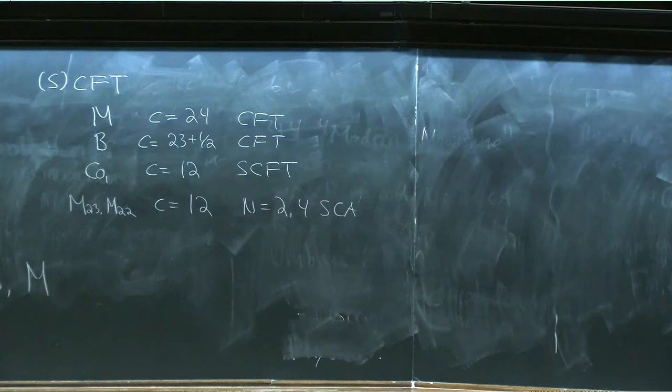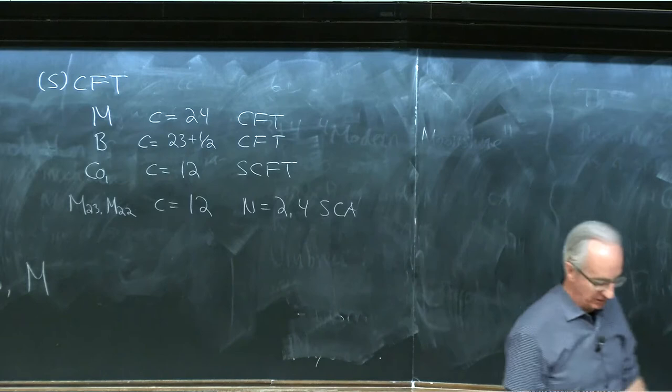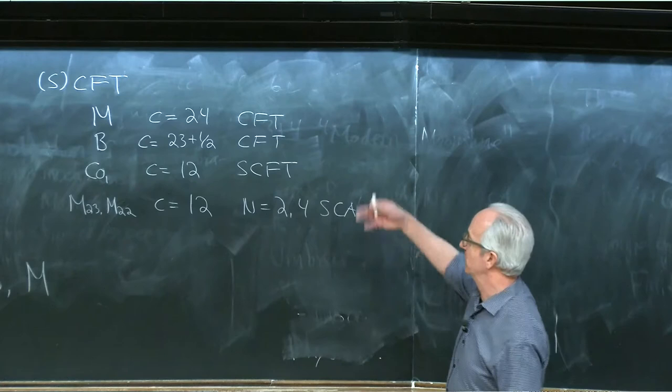These are all kind of classical examples. And it turns out that in further pursuing moonshine, many of these other groups like the Thompson group, the Suzuki group, the McLaughlin group, also show up. So in some way that we really don't understand, the right framework for studying these sporadic groups seems to involve conformal field theory and aspects of string theory. I want to use techniques from conformal field theory to explain the structure, where these groups are coming from, and what you can learn about them.